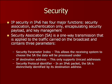The security parameter index allows the receiving system to choose the SA the data will be processed under. The IP destination address only supports unicast, and the security protocol identifier in the IPv6 packet — the SA is distinctively identified by its destination address.